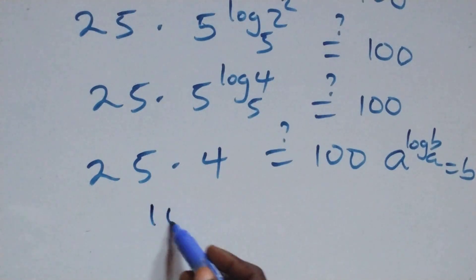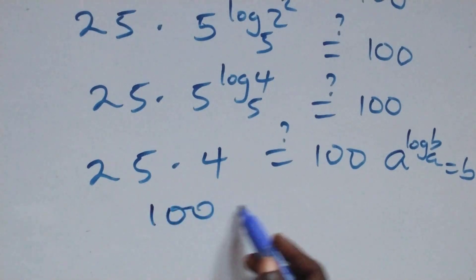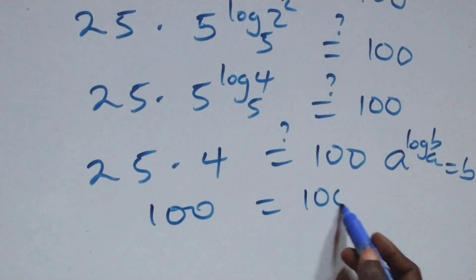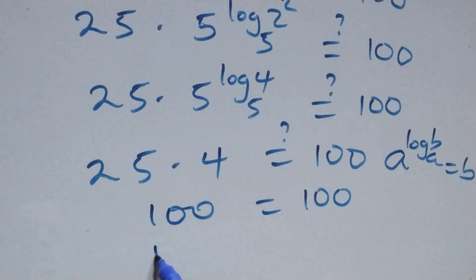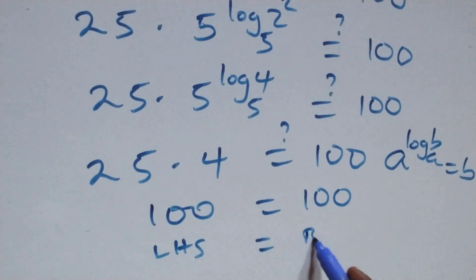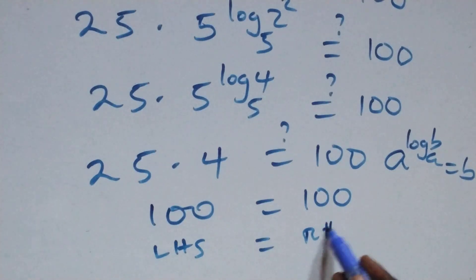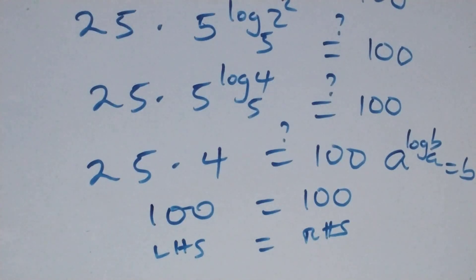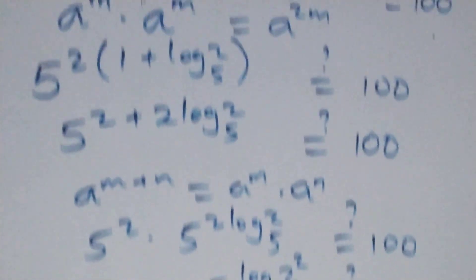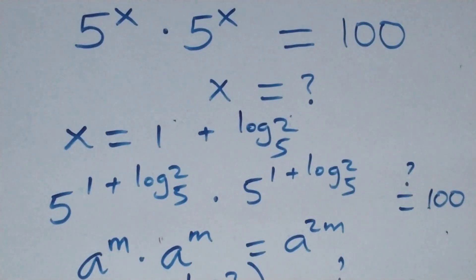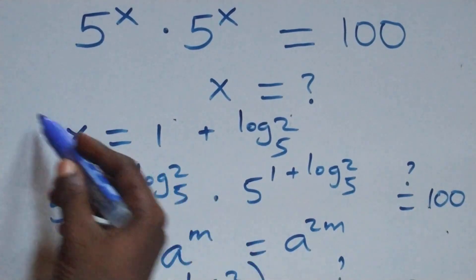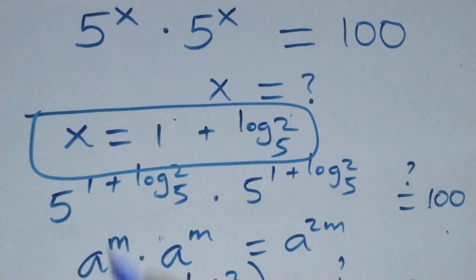25 times 4 equals 100 on this side, and the left-hand side equals the right-hand side. Therefore, we conclude that x equals 1 plus log₅2 satisfies this given problem.